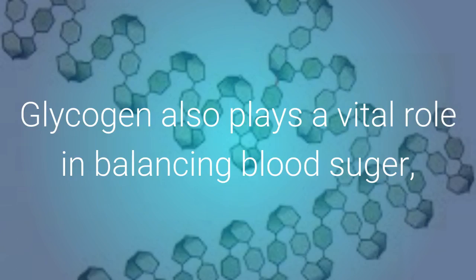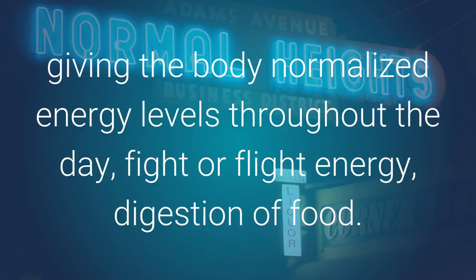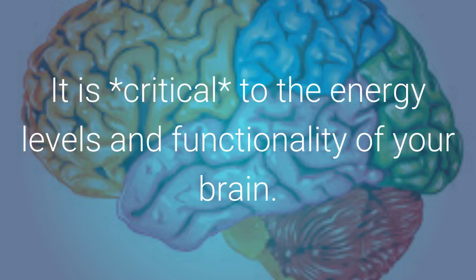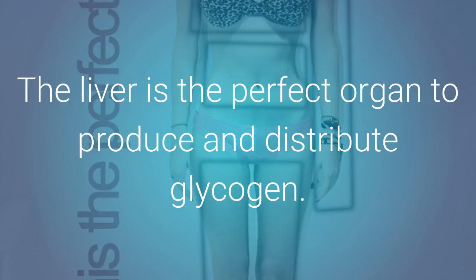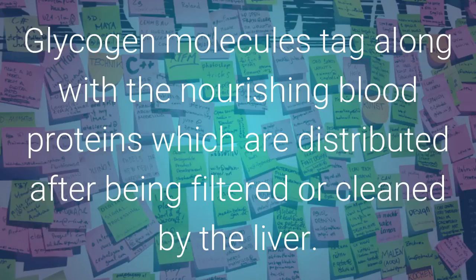Glycogen also plays a vital role in balancing blood sugar, giving the body normalized energy levels throughout the day, fight or flight energy, and digestion of food. It is critical to the energy levels and functionality of your brain. If the liver is damaged or needs to be cleaned, this will throw off the critical supply or proper production of this molecule in your body. The liver is the perfect organ to produce and distribute glycogen. Glycogen molecules tag along with the nourishing blood proteins which are distributed after being filtered or cleaned by the liver.